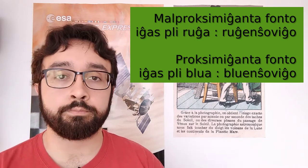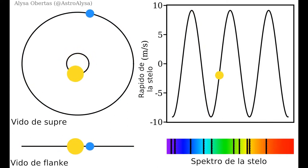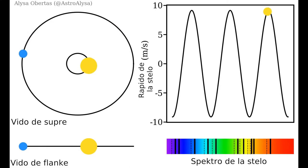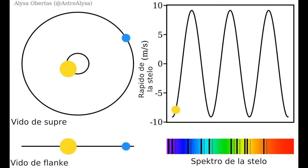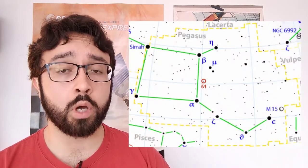So when a star approaches, its entire spectrum shifts blue, and when the star moves away, it shifts red. Thanks to this, one can measure the speed of the star relative to us — its radial velocity. In 1995, Swiss astronomers Michel Mayor and Didier Queloz discovered the first planet around another star, found orbiting the star 51 Pegasi. That first planet was found using the radial velocity method, and for a long time it was the only method used.